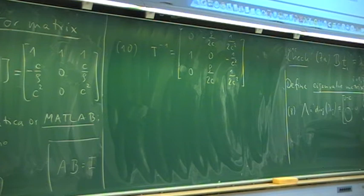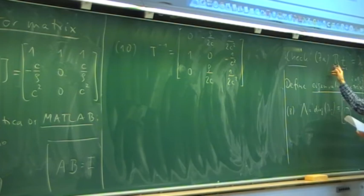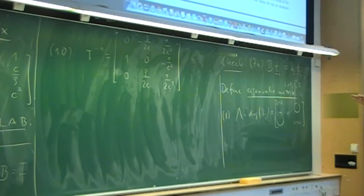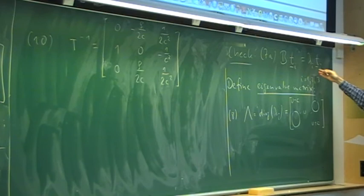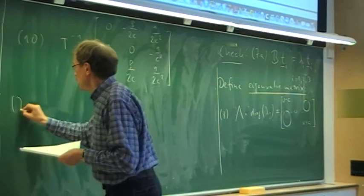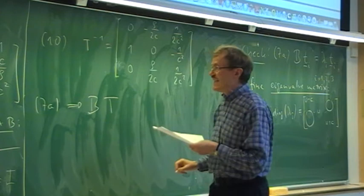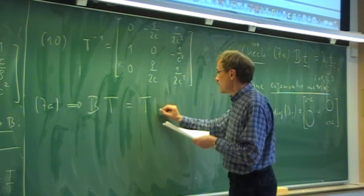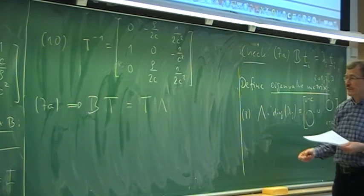Now we use these matrices. What we noted about eigenvectors and eigenvalues is that B * t_i = lambda_i * t_i. If we do this for all eigenvectors simultaneously — B times (t_1, t_2, t_3) — we get (lambda_1*t_1, lambda_2*t_2, lambda_3*t_3), which equals T * Lambda. So B * T = T * Lambda, and multiplying by T^{-1} from the right gives us B = T * Lambda * T^{-1}.